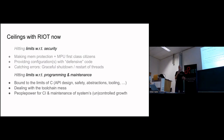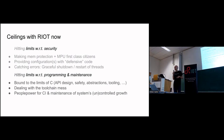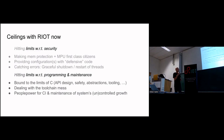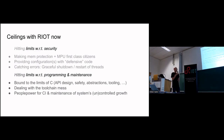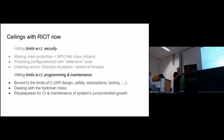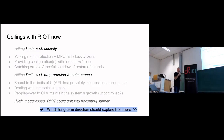The second type of limits we have with our current approach concerns programming and maintenance. We're bound to the limits of C — we use C predominantly — which doesn't provide the right tracking tooling that we would need. The tooling is somewhat messy. And more generally, we're hitting maintenance and CI limits concerning the people power we have, and this growth is not very controlled. The main message here is that if we don't address these problems, RIOT could slowly drift into an inferior position compared to other systems out there.